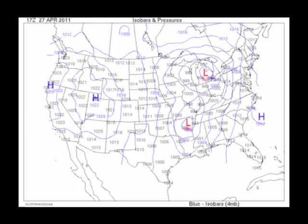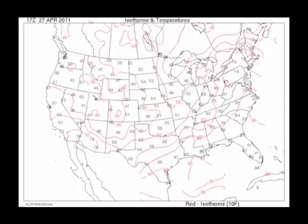So on this map, we have the pressures across the U.S. as of April 27th. You see that high pressure is in the west, and a couple of low pressures are in the east. And here are the temperatures. Where are the warmest temperatures? Actually, as you go across the midsection, they do get warmer across the low pressures.